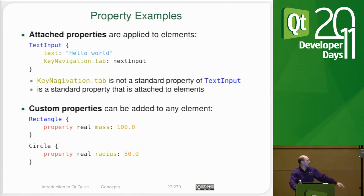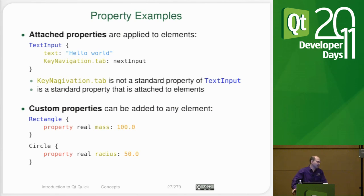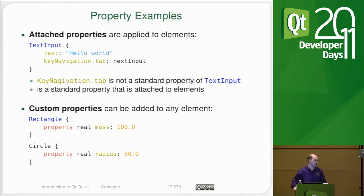You can also make your own custom properties on any item, whether it is an instance of an item or an item you put in your own file which becomes instantiable. Here we're making a rectangle and adding a property called 'mass' whose type is real. The real type in QML is analogous to float. It's actually going to depend on what platform you are on — on the ARM architecture it's generally going to be float, on x86 it'll be double, only because they're faster.